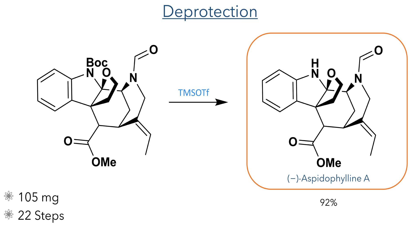Overall the authors produced 105 mg in a single batch, carried out in 22 steps. However many of these were carried out sequentially without purification, which drastically reduces the time needed to synthesise this molecule. Overall this was a very efficient synthesis with lots of exciting chemistry, including gold and nickel-promoted cyclisations, an elegant azidoalkoxylation reaction, and a single asymmetric reaction in the form of a transfer hydrogenation to install a stereocentre which controlled the stereochemistry for the entire synthesis.